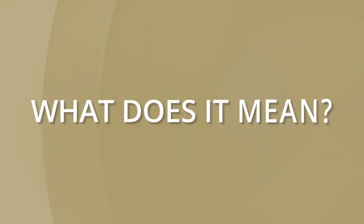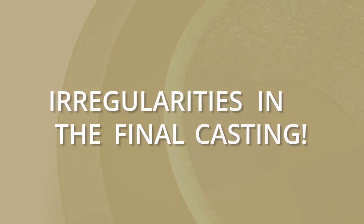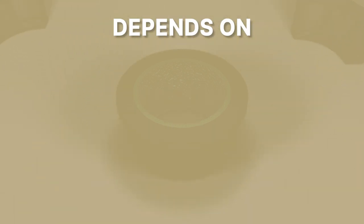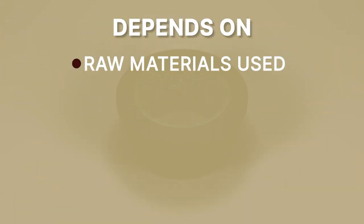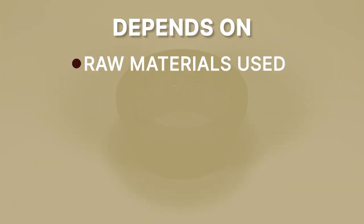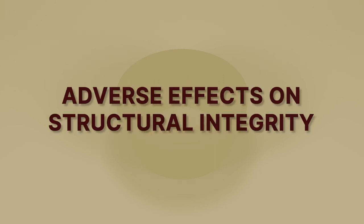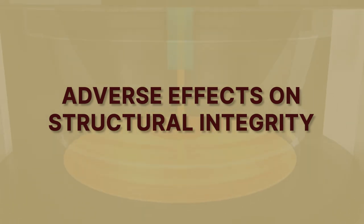First of all, what exactly do casting defects mean? The irregularities observed in the final product after the casting process are called casting defects. Whether the final casting contains defects or not depends on the raw material used, casting design, and process parameter control. It is extremely important to remove such defects as they have major adverse effects on the structural integrity of the castings.